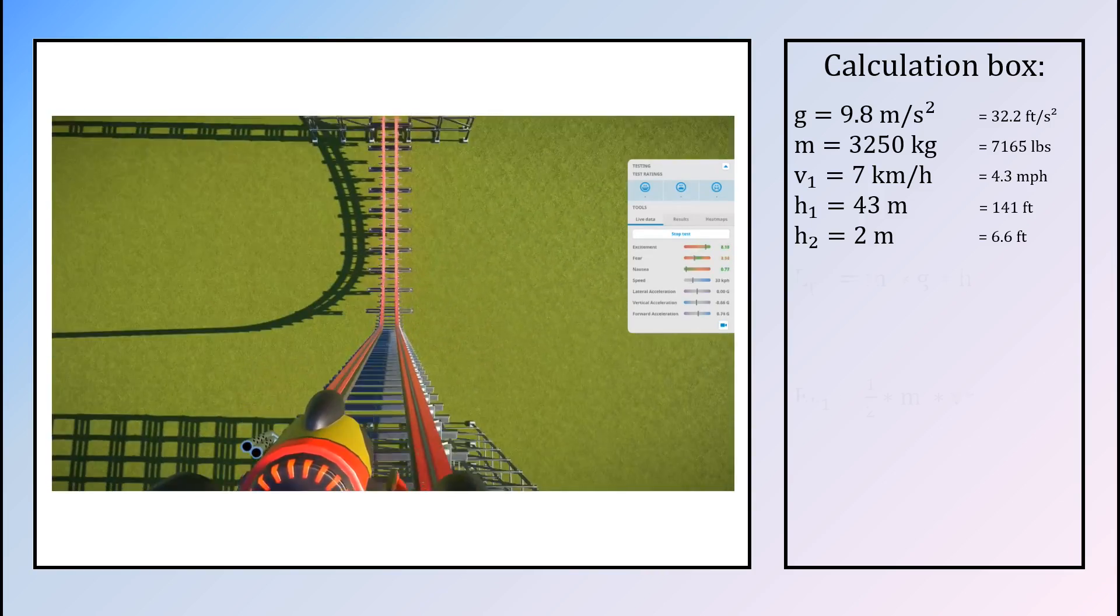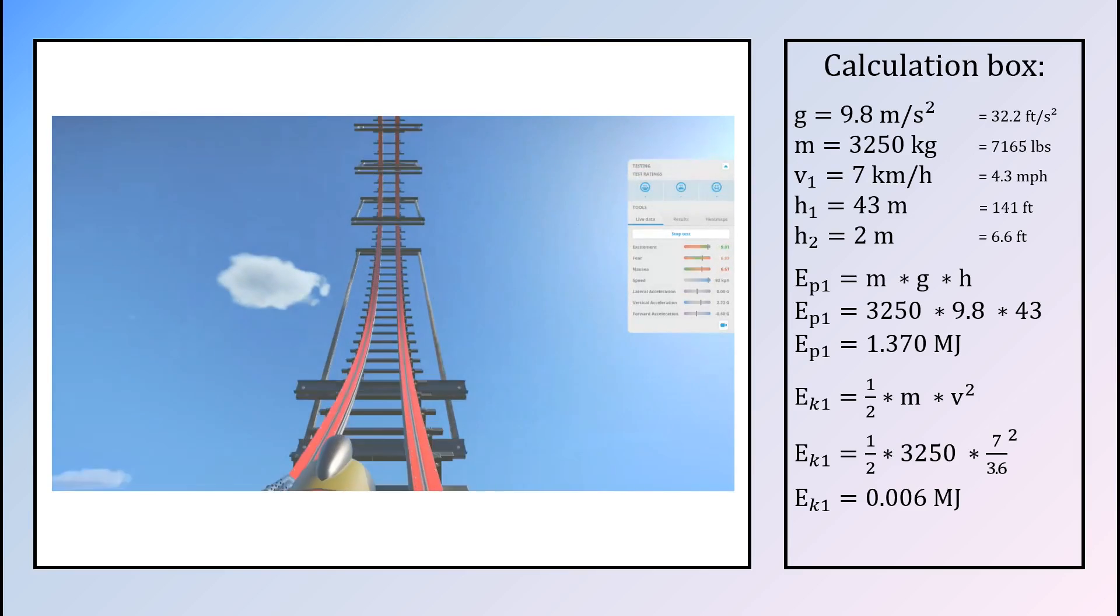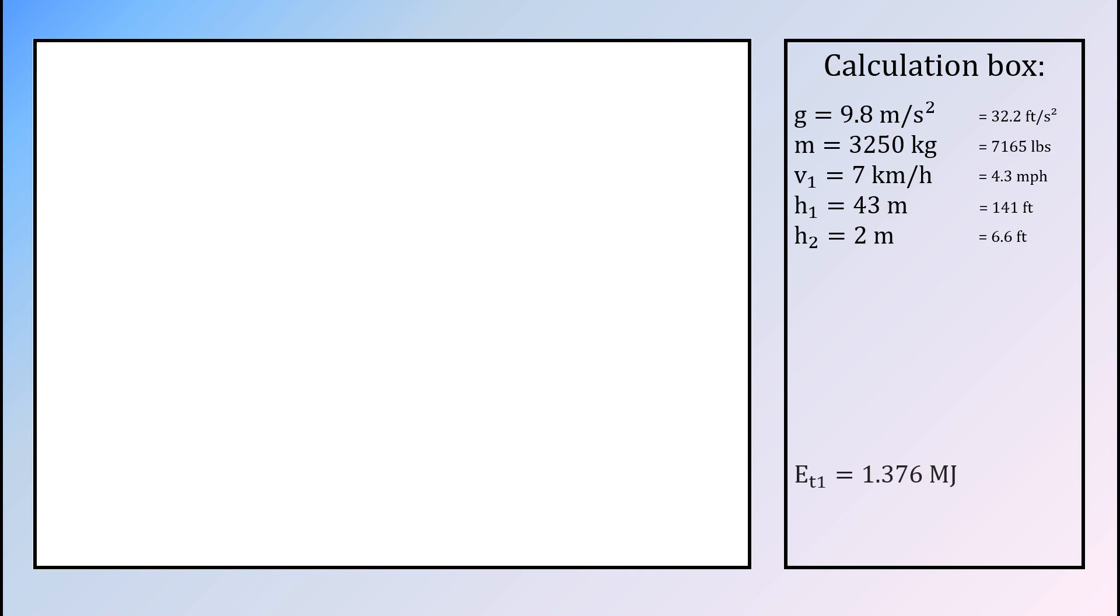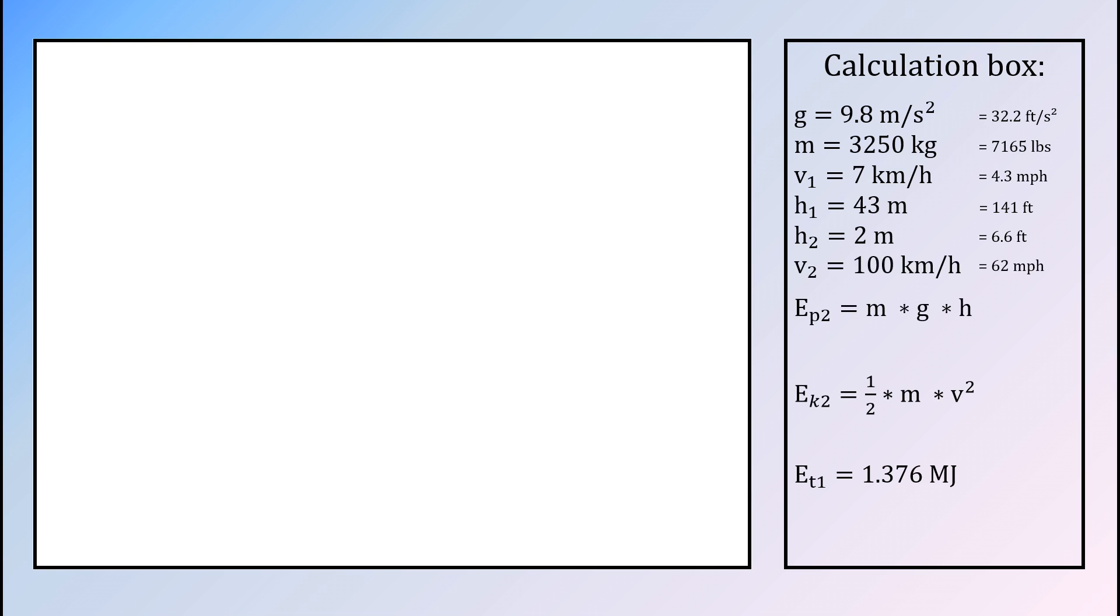According to equations of potential and kinetic energy, the total amount of energy at the top of the hill is equal to 1.4 megajoule. The same calculation can be done for the part after the drop, where the cart reaches a speed of 100 km per hour. This will result in an energy level of 1.3 megajoule.